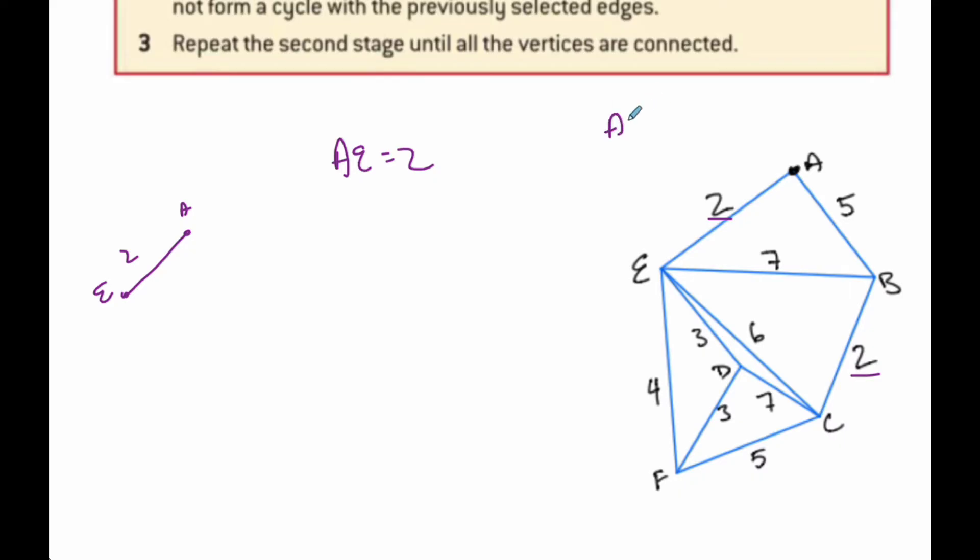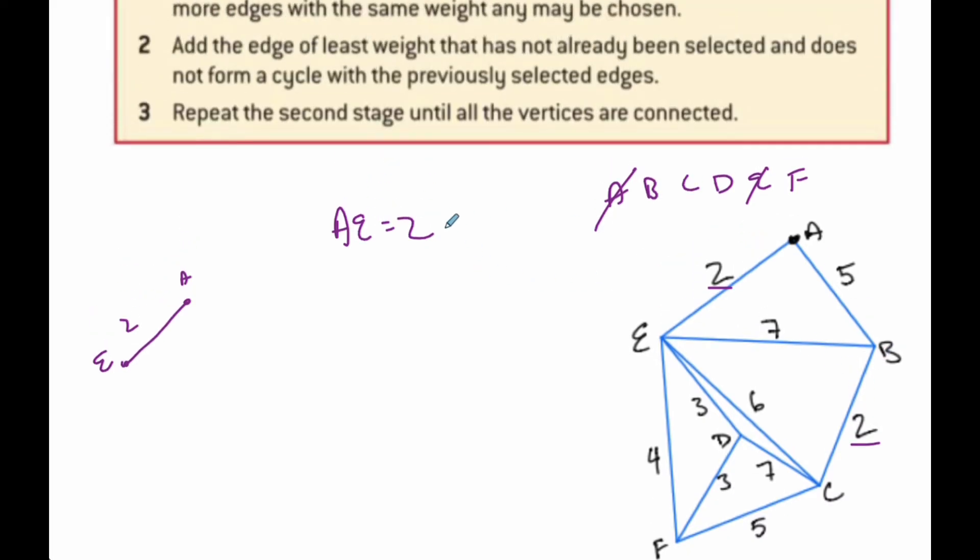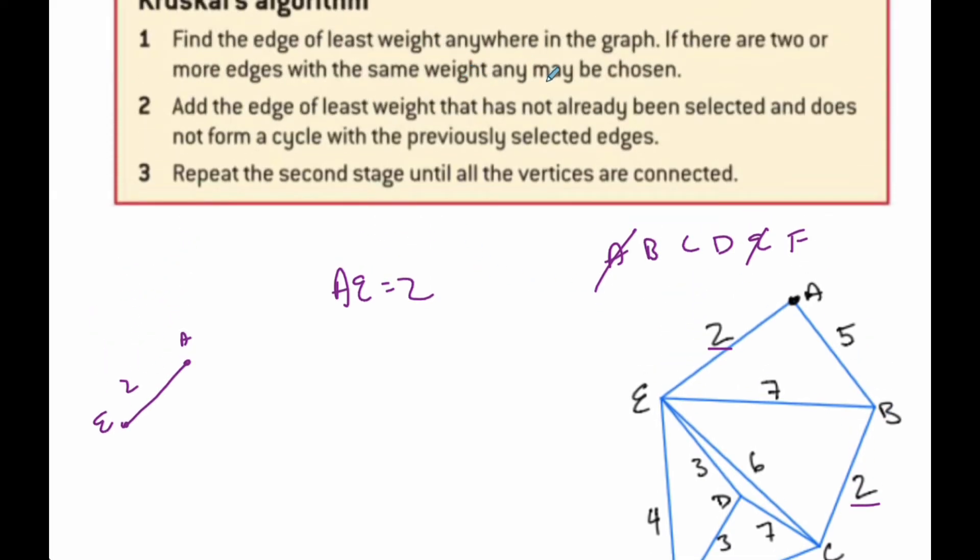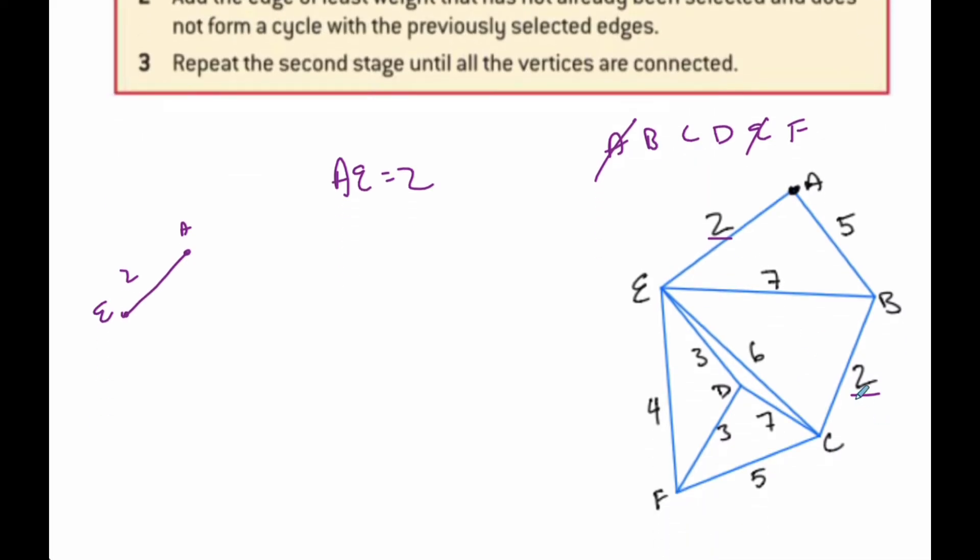And one of the things I also like to do, so I don't lose track of which ones I've selected. Once I've got them all selected, then I can say that I'm done. So I have A, I have E done. Then I want to do the next edge of the least weight. Well, this is the least weight. Here is BC and it is 2. And so BC is next.